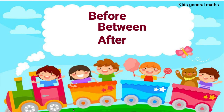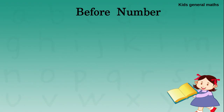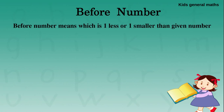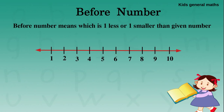Hello my dear children. Now we are going to learn before, after and between numbers. Shall we start now? First we are going to see the before numbers. So what is a before number? A before number is a number which is one less or one smaller than the given number. We all know the number line.